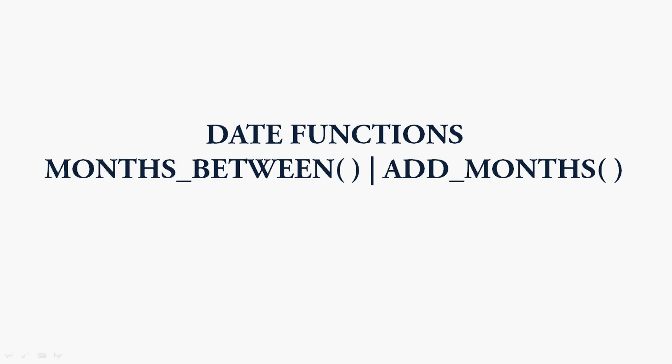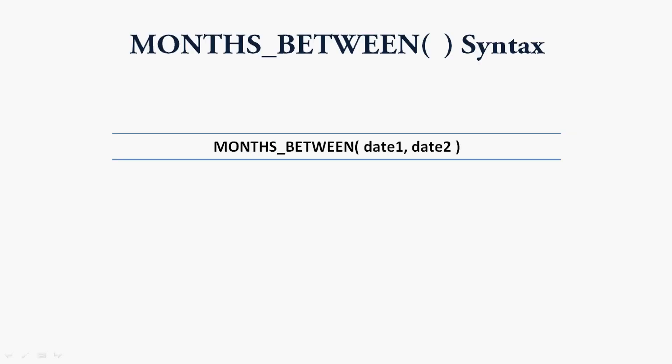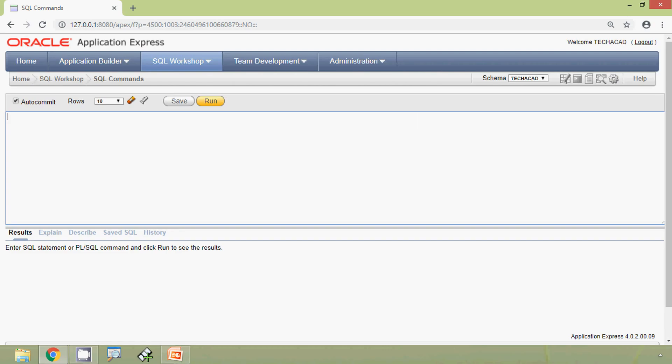Hi friends, welcome to Oracle tutorials. In this video we are going to see two date functions: MONTHS_BETWEEN and ADD_MONTHS. First we will see the function MONTHS_BETWEEN. This function returns the number of months between two specified dates. The syntax is: MONTHS_BETWEEN(date1, date2). We will see some examples using Oracle Express Application so that it will be more clear.